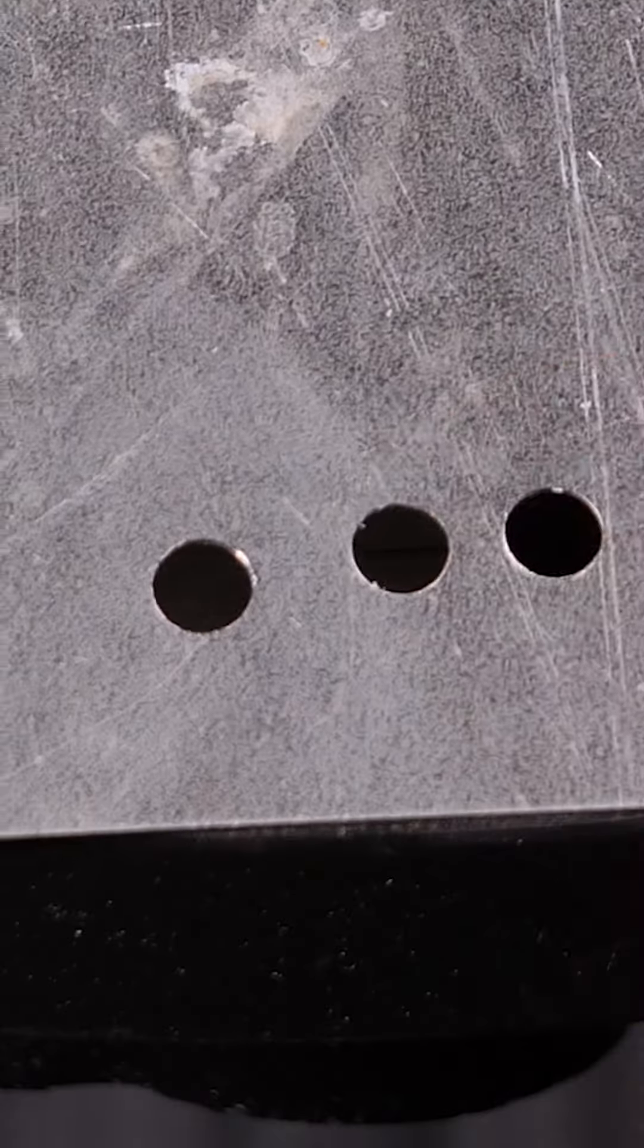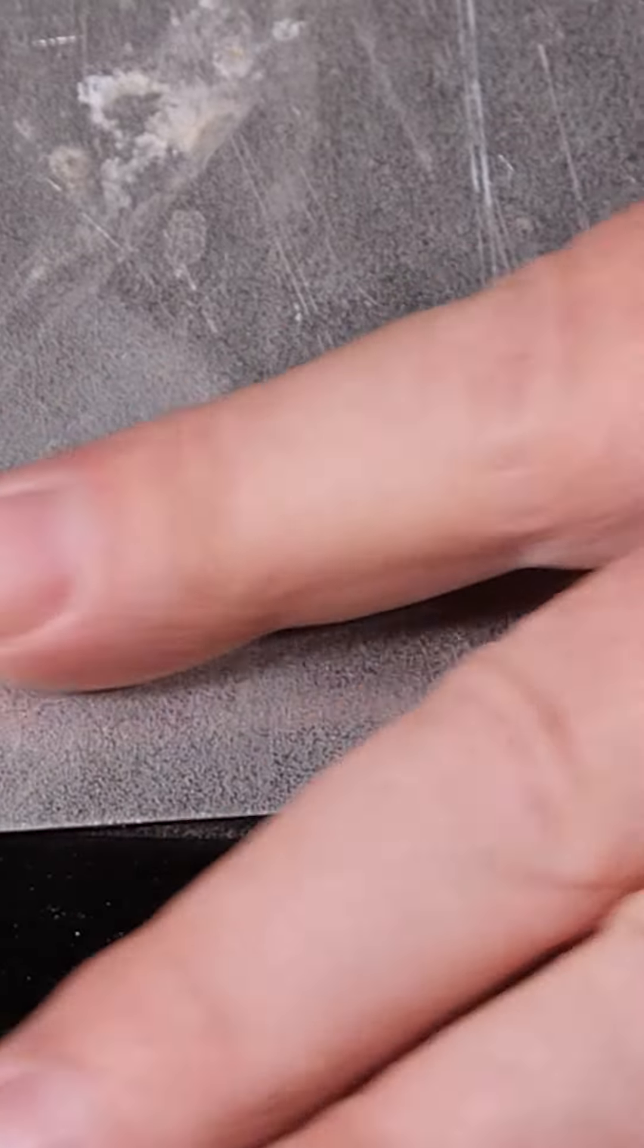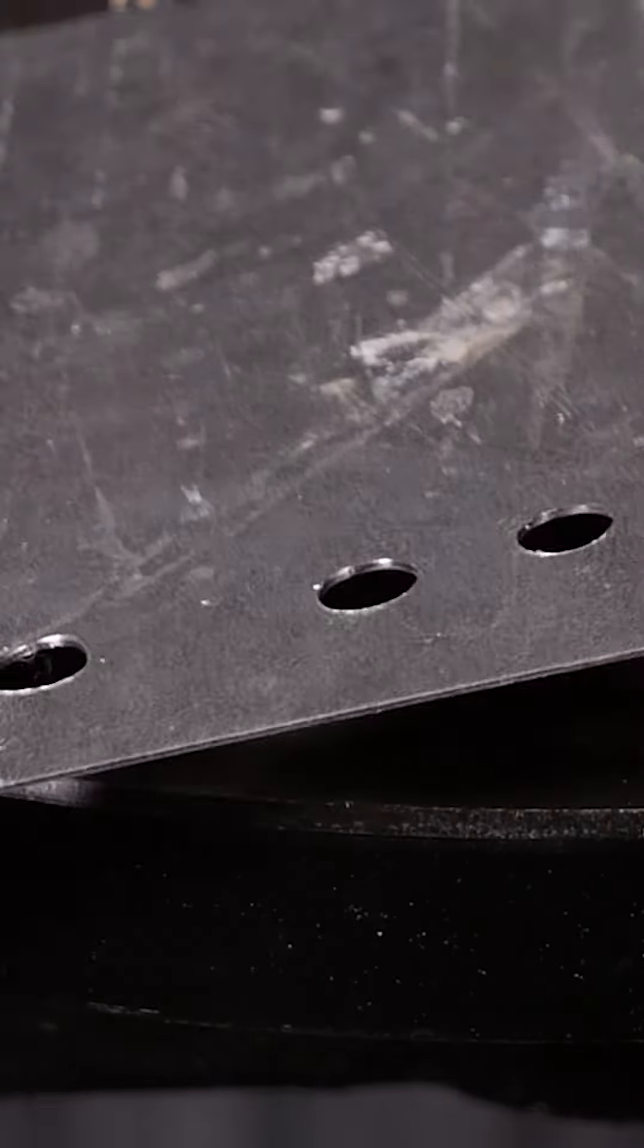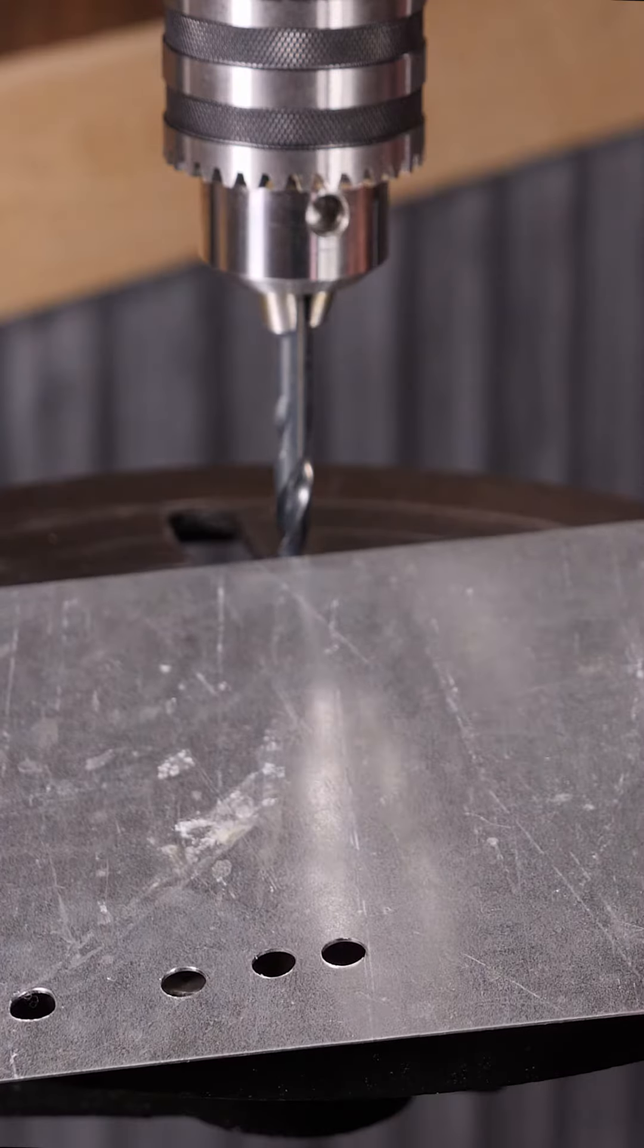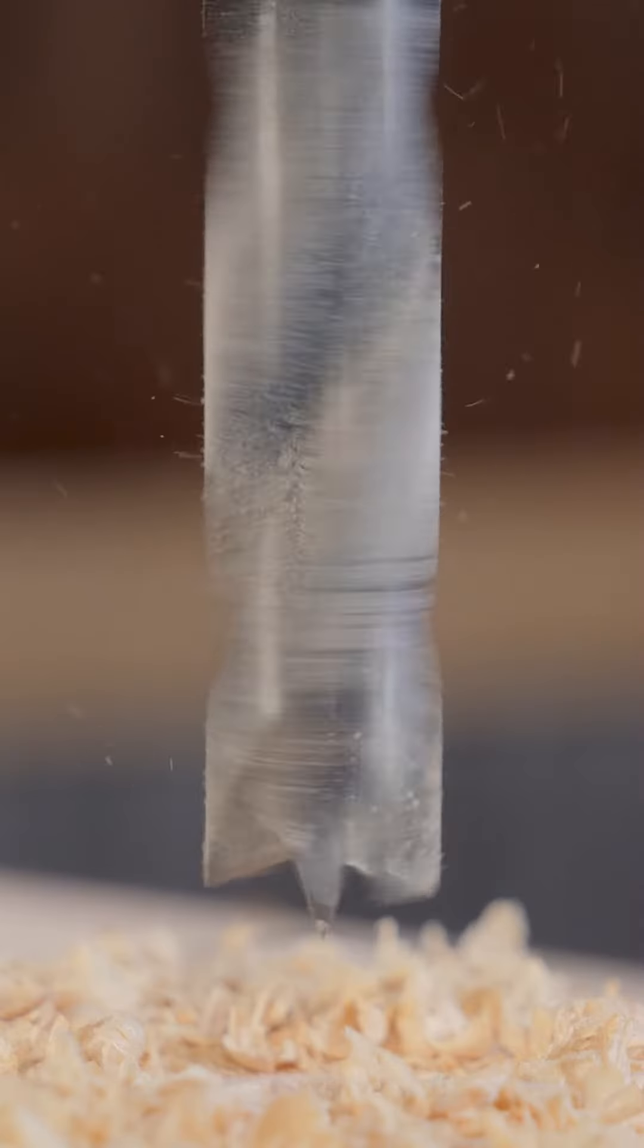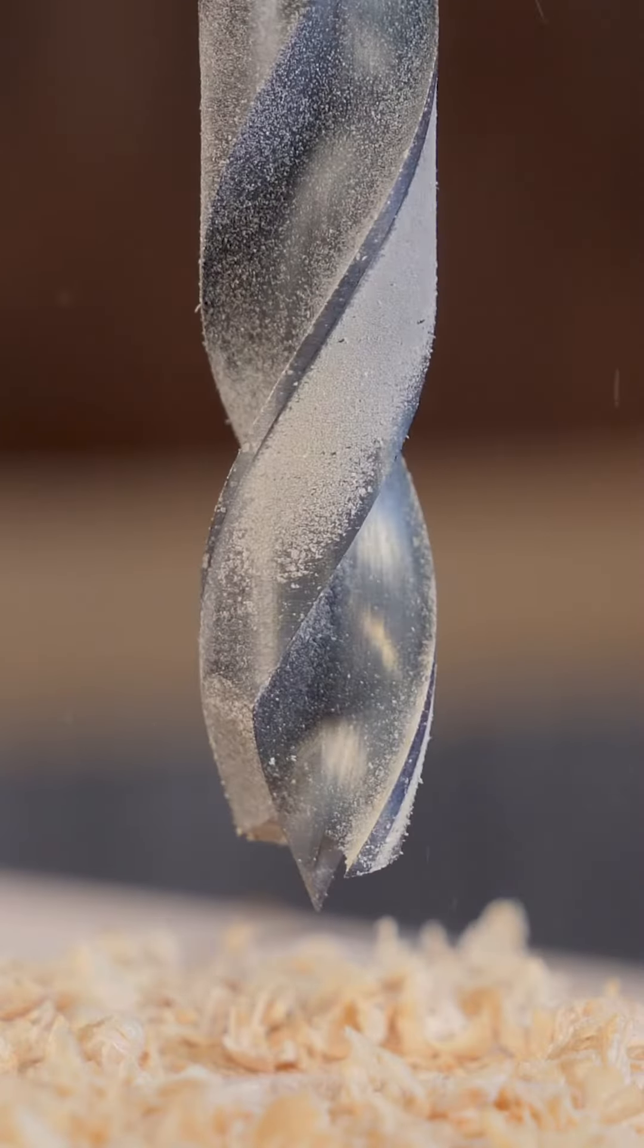If I flip it over, I've got a clean edge right there with less burr than anything else we've exhibited in the previous holes. So it can also be a really great tool to use for those sheet metal applications. Montana brand tools X29 Brad Point drill bit.